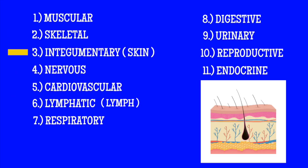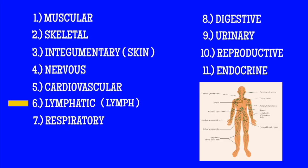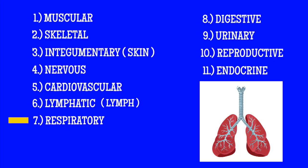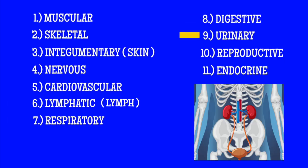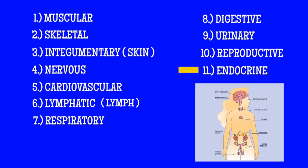Muscular, skeletal and skin, integumentary, nervous, cardio and limb, lymphatic, respiratory, digestive, urinary, reproductive and the endocrine. Here we go again —